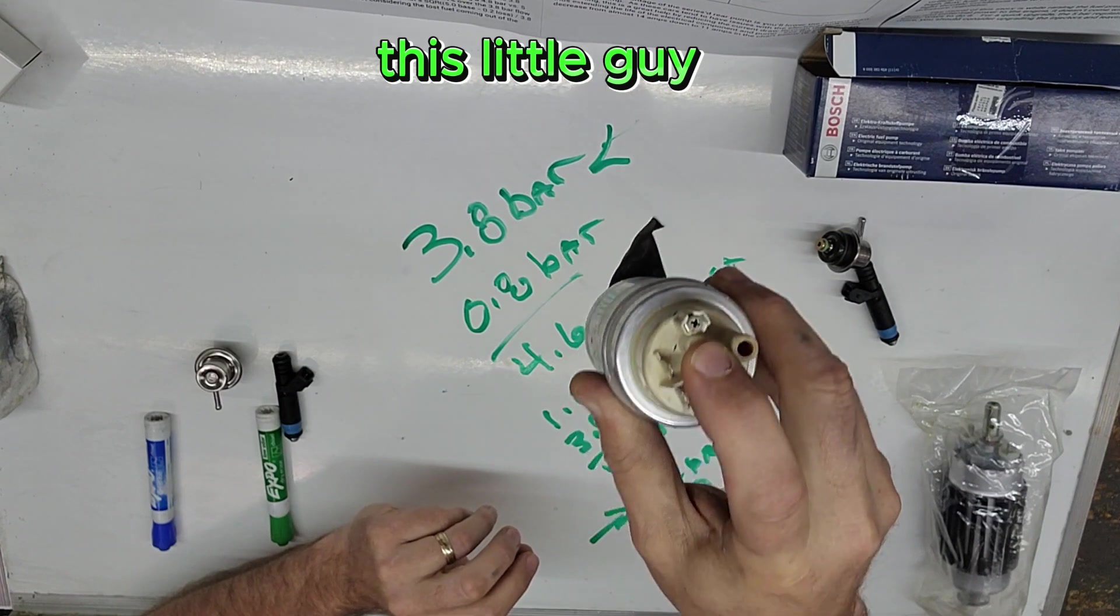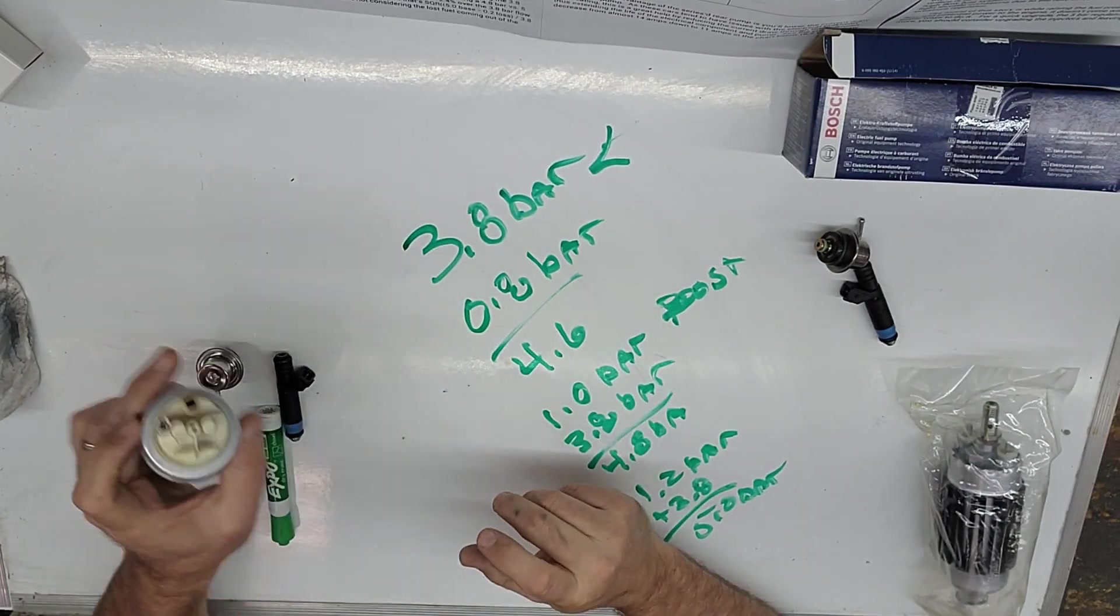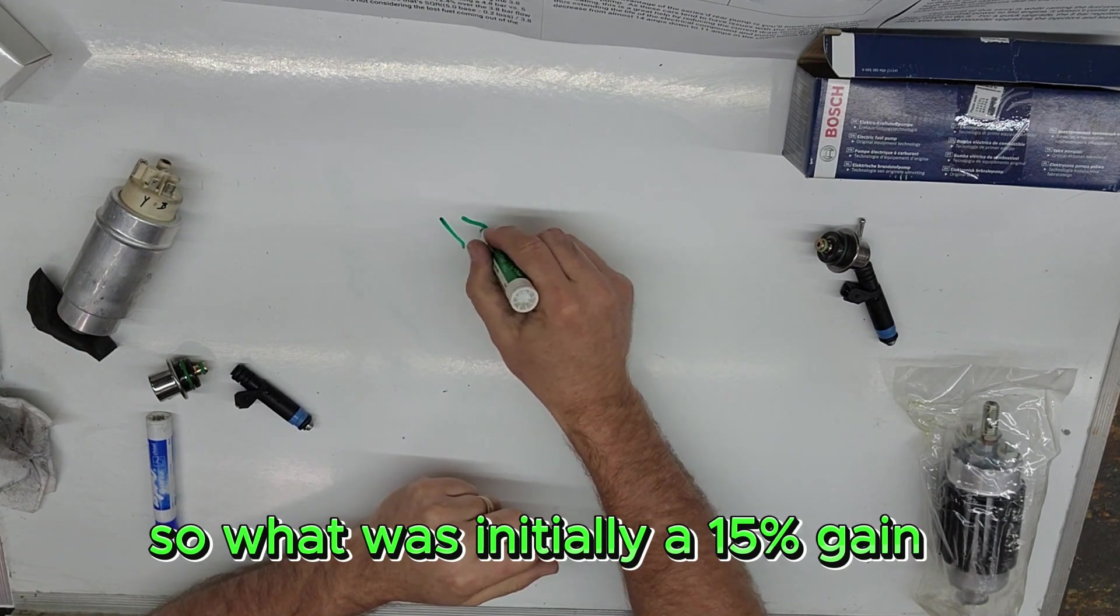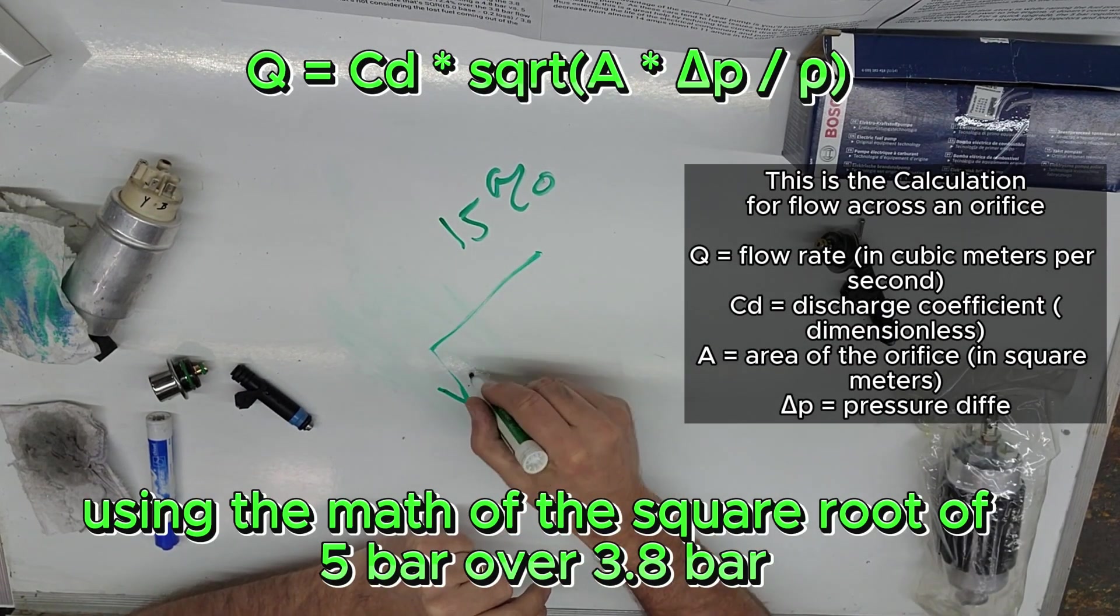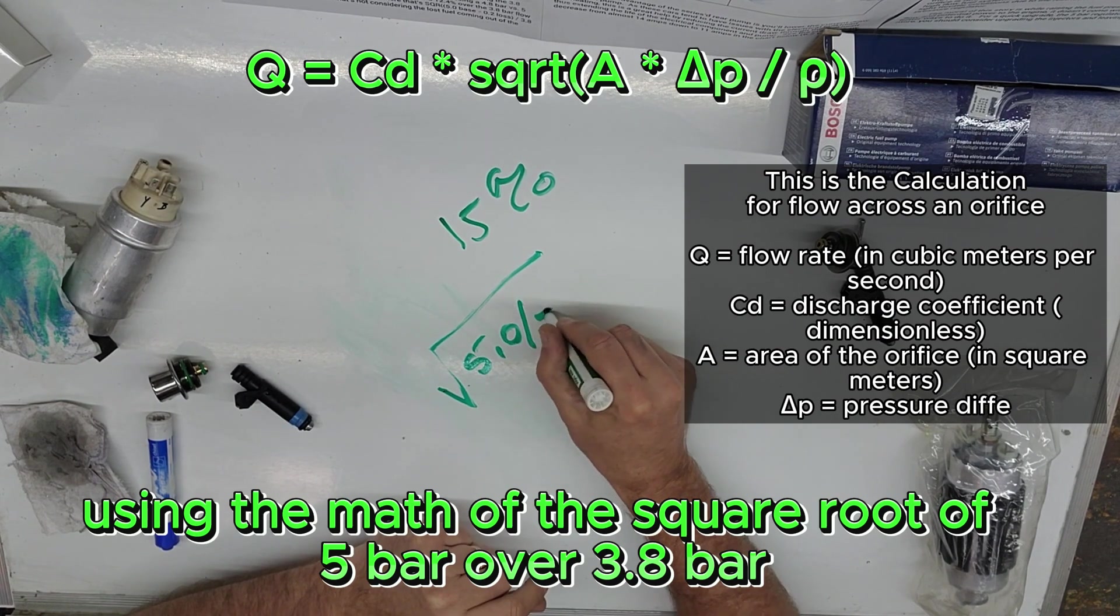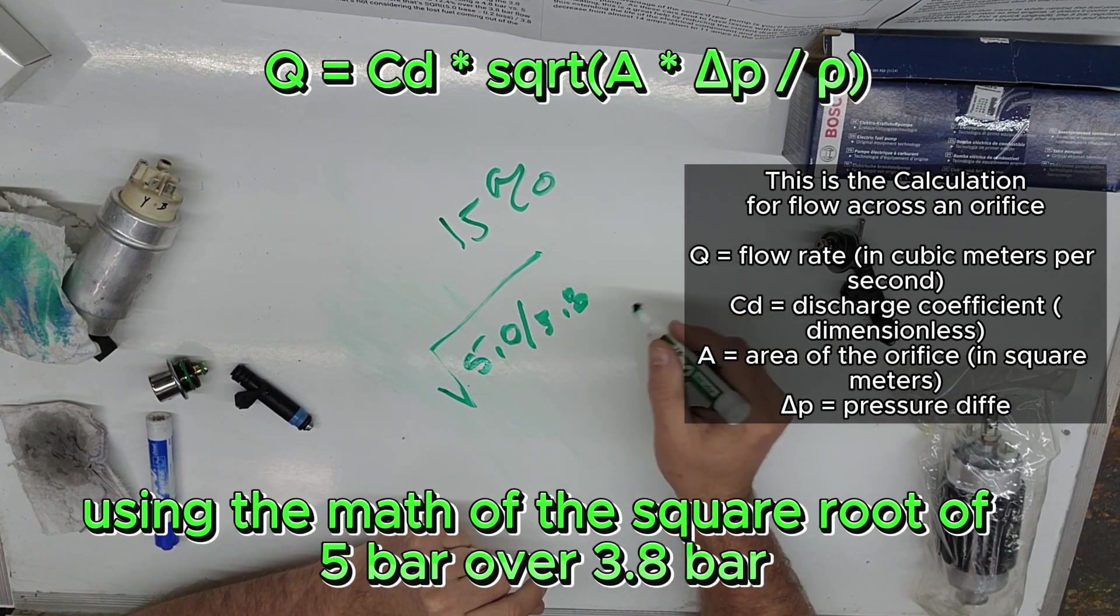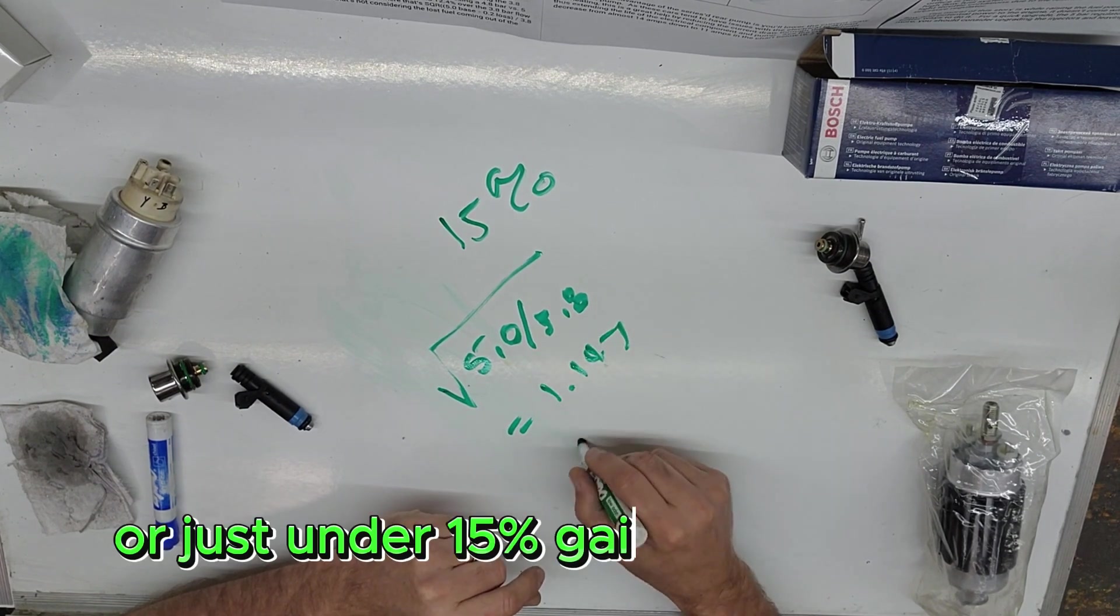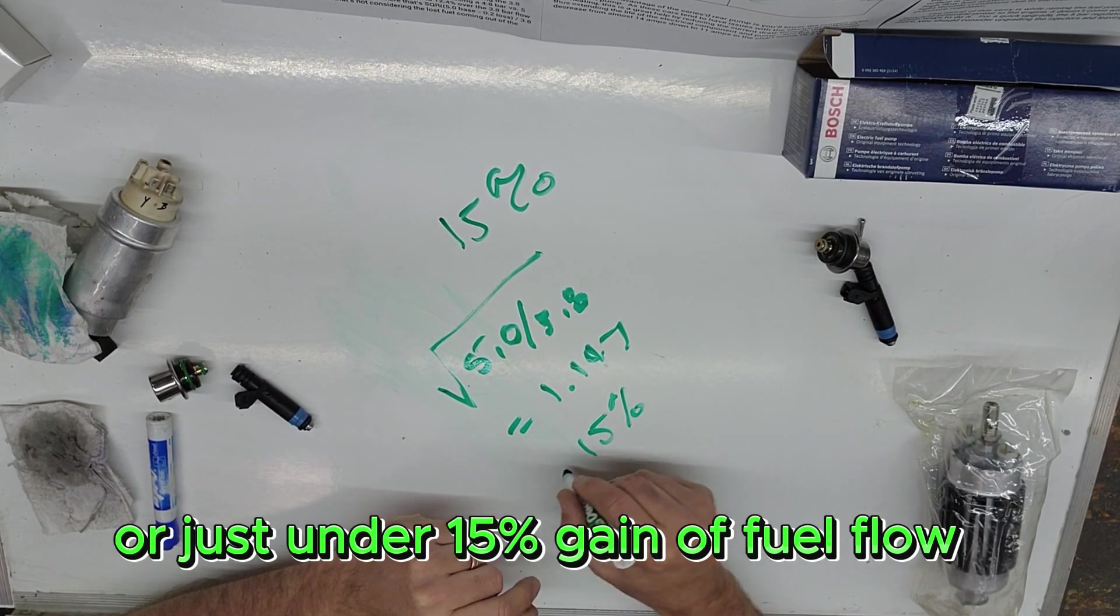This little guy. So, what was initially a 15 percent gain, using the math of the square root of 5 bar over 3.8 bar, that gives you 1.147 or just under 15 percent gain of fuel flow.